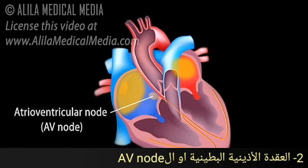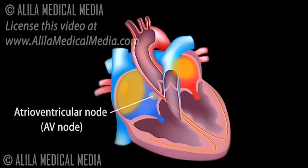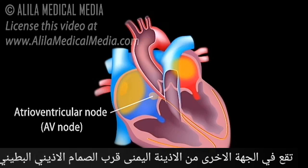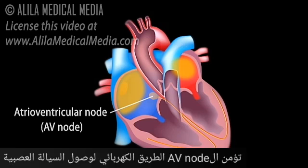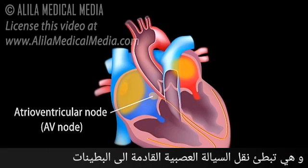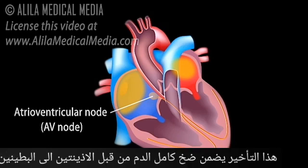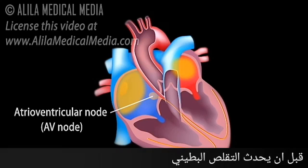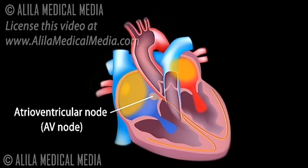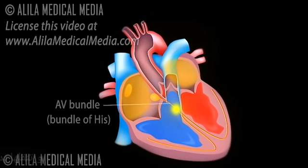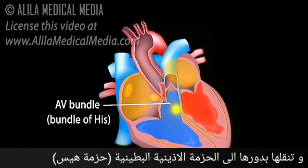The atrioventricular node, or AV node, is located on the other side of the right atrium near the AV valve. The AV node serves as the electrical gateway to the ventricles. It delays the passage of electrical impulses to the ventricles to ensure that the atria have ejected all the blood into the ventricles before the ventricles contract. The AV node receives signals from the SA node and passes them onto the atrioventricular bundle.